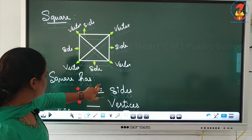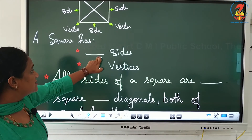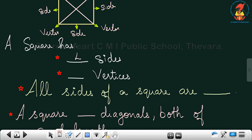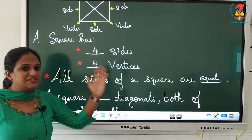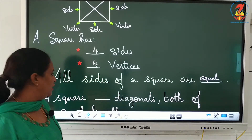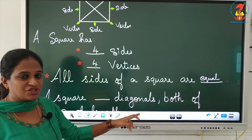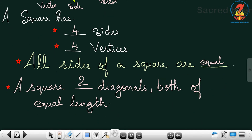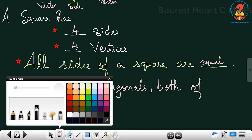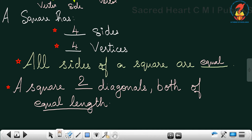Now let us write the answers for square. A square has four sides and four vertices. All sides of a square are equal — unlike a rectangle where only opposite sides are equal. A square has two diagonals and both diagonals are of equal length.